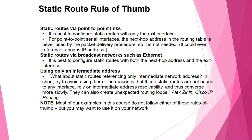The reason to avoid intermediate-only static routes is that these static routes are not as stable. They rely on the intermediate address for resolvability and converge more slowly. They can also create unexpected routing loops and spoil the routing. Most examples in this course do not strictly follow these rules of thumb, but you may want to apply them on your own network.